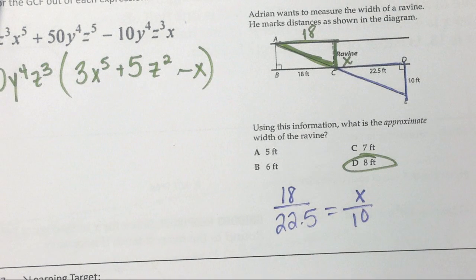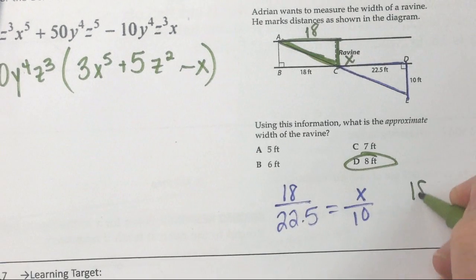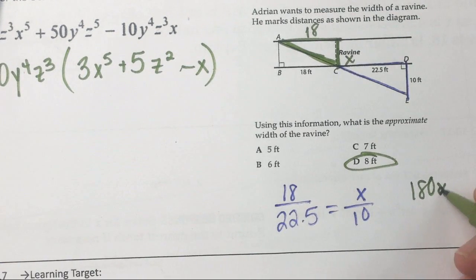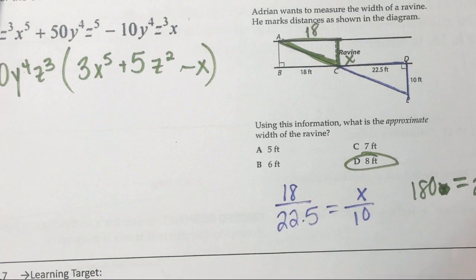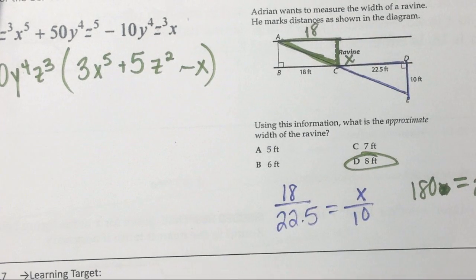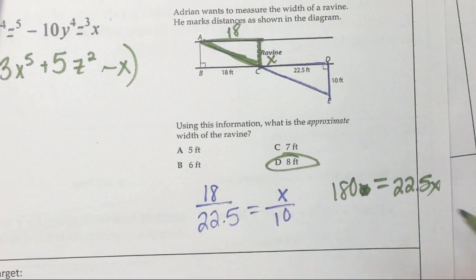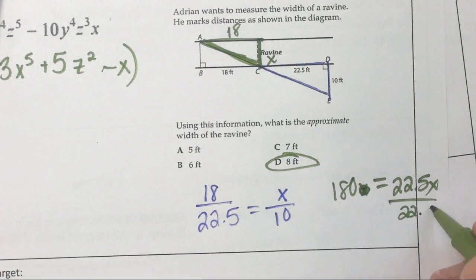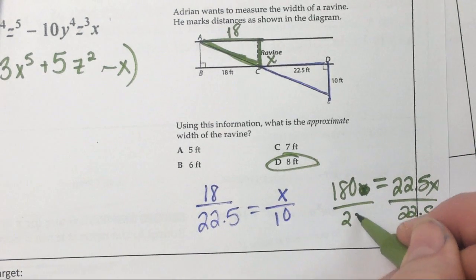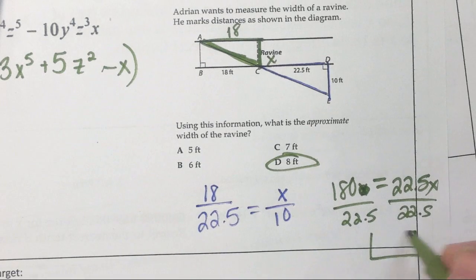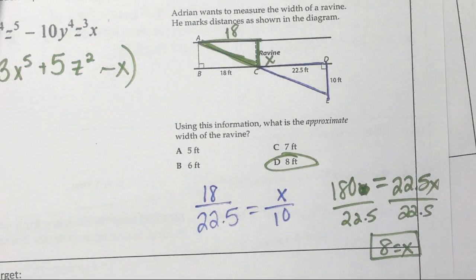22.5. Equals x over 10. You cross multiply and you get 180 equals 22.5x. And I assume when you divide it by 22.5, is that what you got 8 with? Perfect. Yay, awesome.